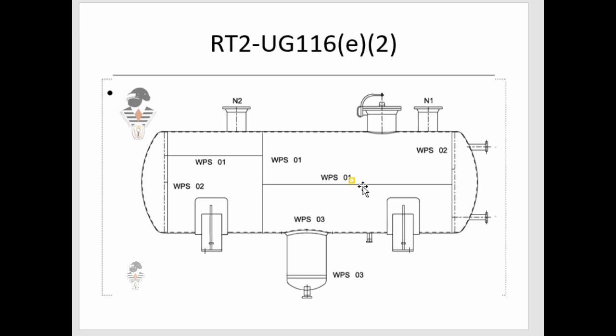Category D butt welded joints are the joints that connect a self-reinforcing nozzle or forged nozzle to the shell. This is a Category D joint — it is a full penetration corner joint, not a butt welded joint.